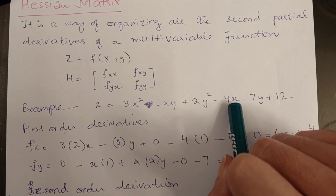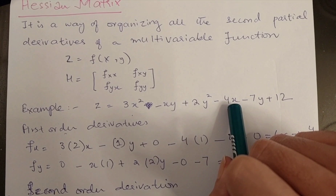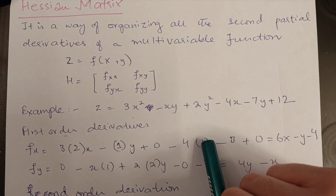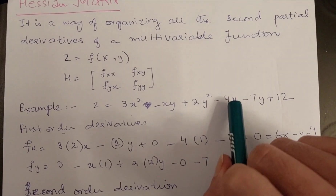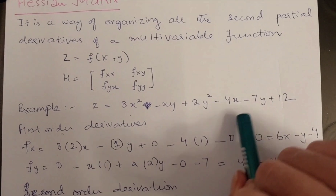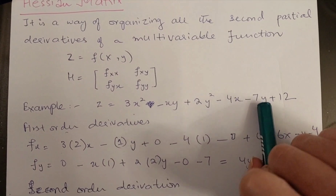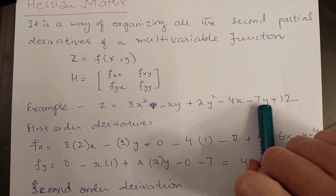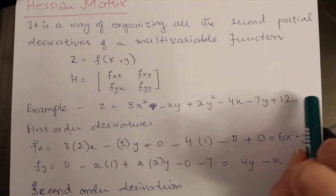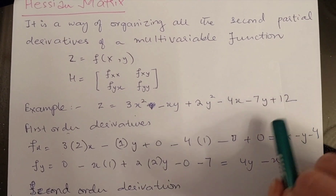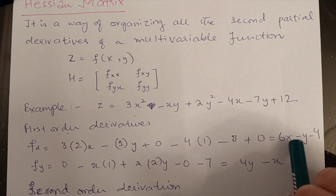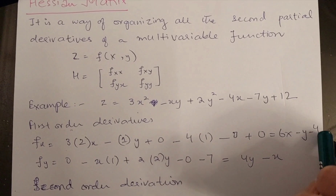For the next term, the partial derivative of x equals 1, so I place 1 here and 4 comes as the coefficient. For the remaining terms there is no x, so the partial derivative with respect to x is 0. So the answer is 6x minus y minus 4.